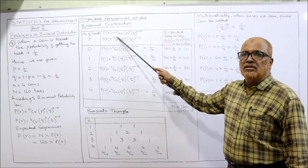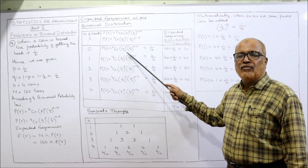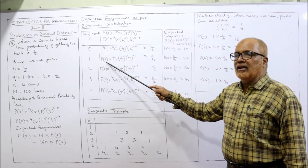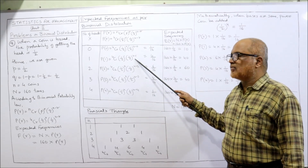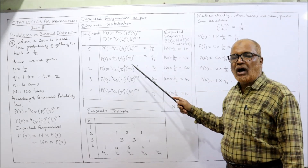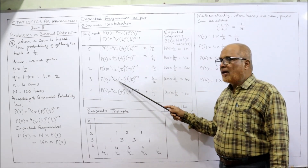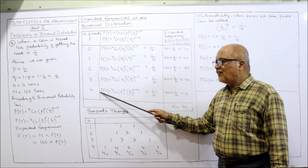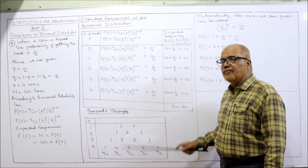The P(r) expressions are: P(0) = 4C0 × (1/2)^0 × (1/2)^4; P(1) = 4C1 × (1/2)^1 × (1/2)^3; P(2) = 4C2 × (1/2)^2 × (1/2)^2; P(3) = 4C3 × (1/2)^3 × (1/2)^1; P(4) = 4C4 × (1/2)^4 × (1/2)^0.